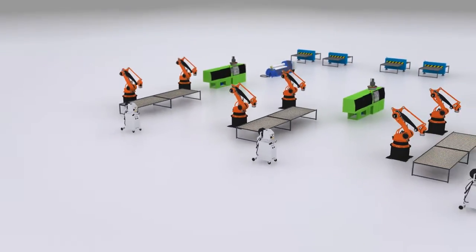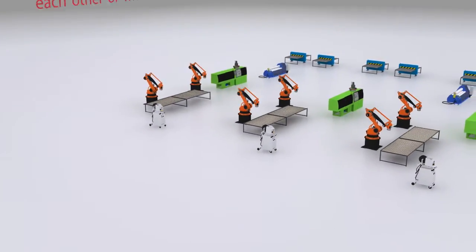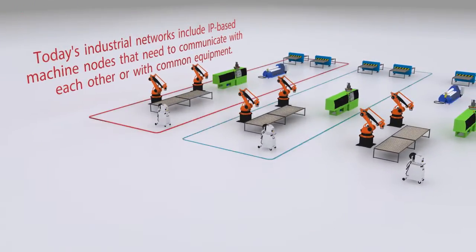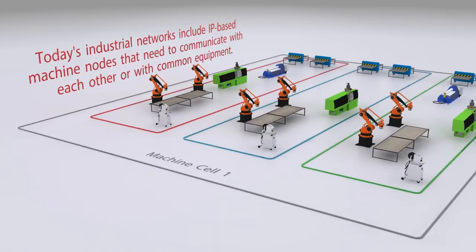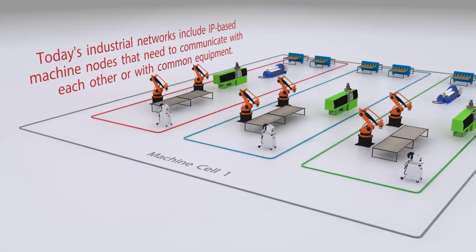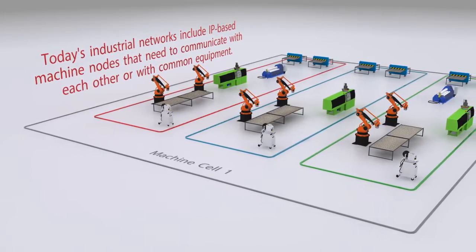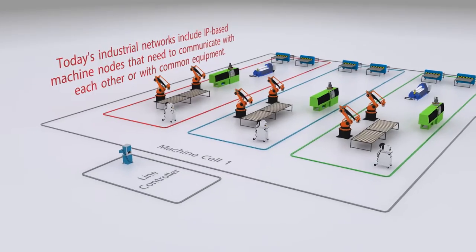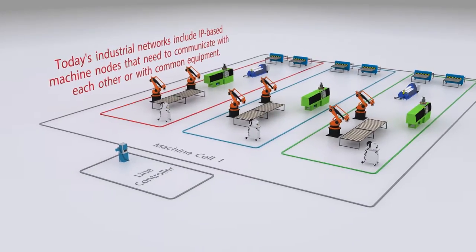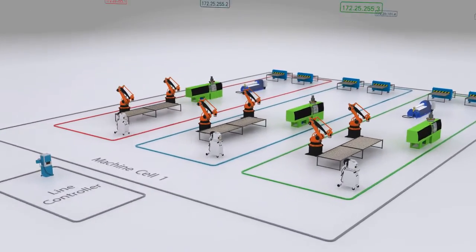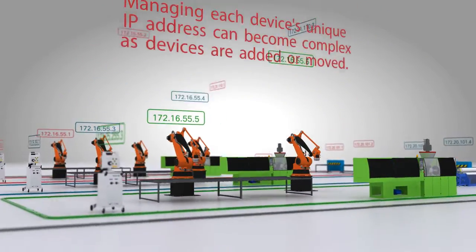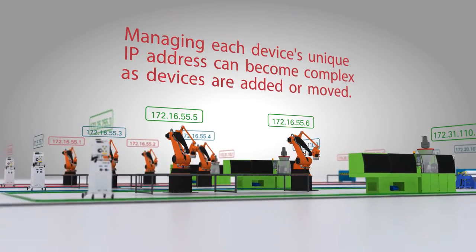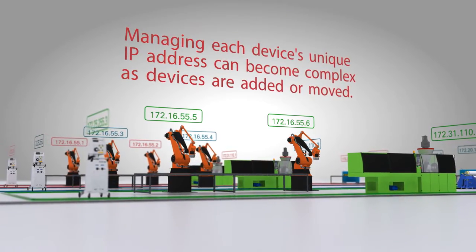In today's industrial networks, it is typical to see multiple unique cells or lines within a single location with IP-based machine nodes that need to communicate with each other or with common equipment. Each device has a unique IP address, and as the number of devices grows, it can become a management nightmare.